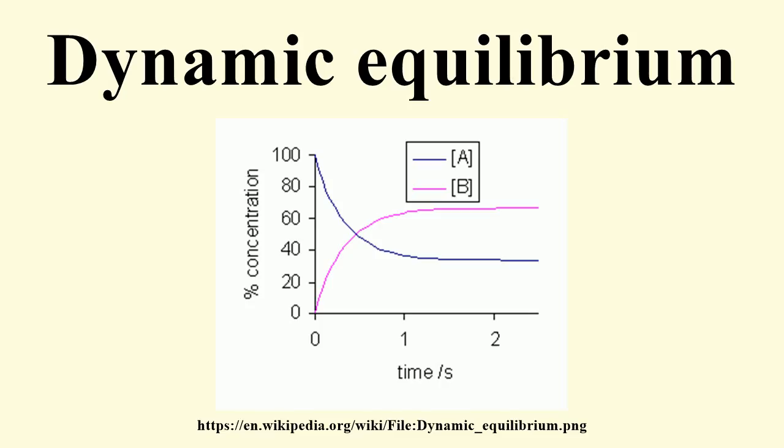If only A is present at the beginning, time T equals 0, with the concentration [A]0, the sum of the two concentrations [A]T and [B]T at time T will be equal to [A]0.